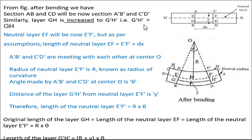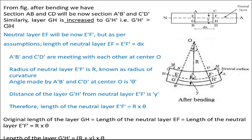G'H' is greater than GH because after bending that layer is stretched and its length increases. The neutral layer EF becomes E'F' after bending, but as per the assumption of pure bending the neutral layer is unchanged — there is no change before and after bending — so EF equals E'F' equals dx. Sections A'B' and C'D' meet at center O after bending, creating a curvature, and if you extend those section lines they meet at point O, the center of curvature.